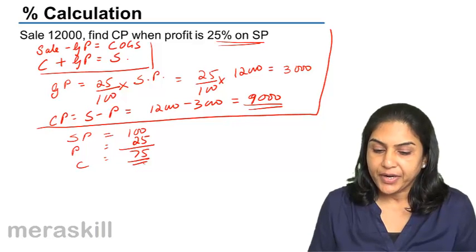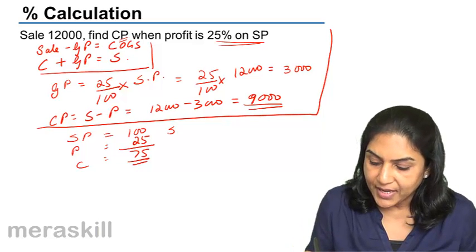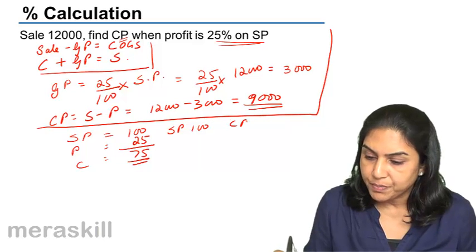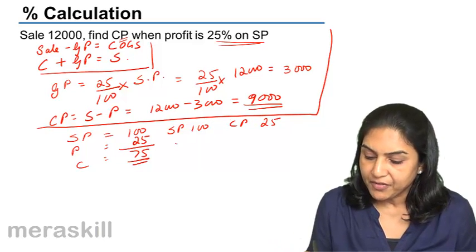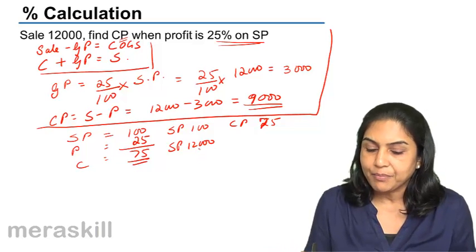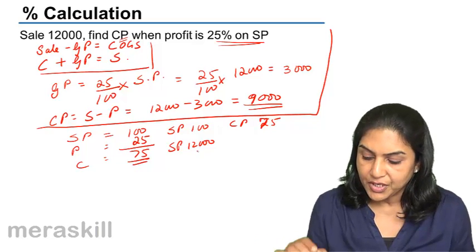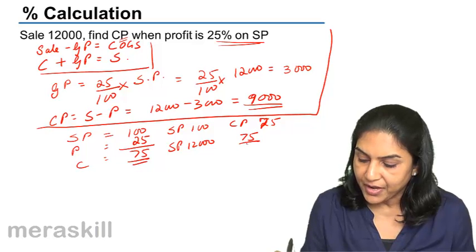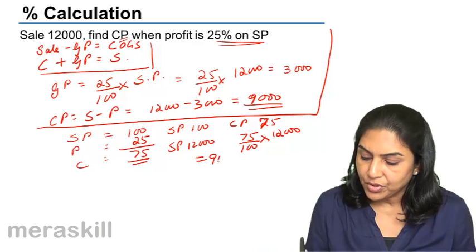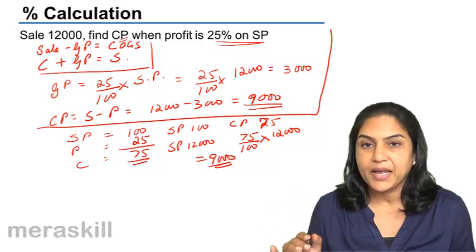We need to find the cost price. When selling price is 100, cost price is 75. So when selling price is 12,000, applying the unitary method: cost equals 75/100 into 12,000, which equals 9,000.